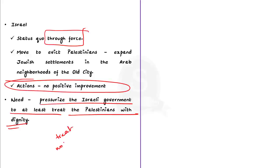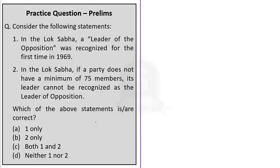Practice question 1: Consider the following statements. Statement 1: In the Lok Sabha, a leader of opposition was recognized for the first time in the year 1969. Statement 2: In the Lok Sabha, if a party does not have a minimum of 75 members, its leader cannot be recognized as the leader of opposition. Statement 1 is correct — it was only in 1969 that an official leader of opposition was recognized, though statutory recognition came only in 1977. Statement 2 is wrong — the requirement is a minimum of 10% of seats, which in a 545-member Lok Sabha means approximately 55 seats, not 75.